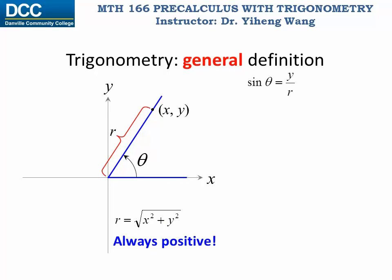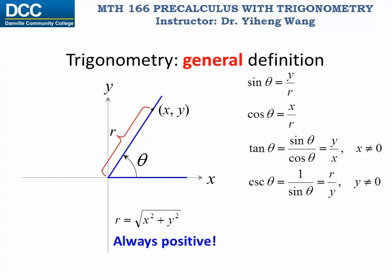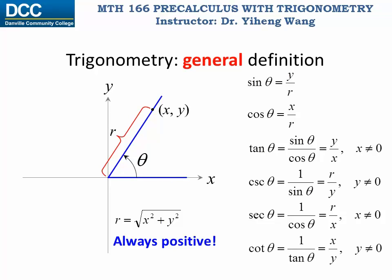Through these we can define the six trigonometric functions for angle theta. Sine theta is y over r. Cosine theta is x over r. Tangent theta is sine theta over cosine theta, therefore it is y over x. Cosecant theta is the reciprocal of sine theta, therefore it is r over y. Secant theta is the reciprocal of cosine theta, therefore it is r over x. And lastly, cotangent theta is the reciprocal of tangent theta, therefore it is x over y.